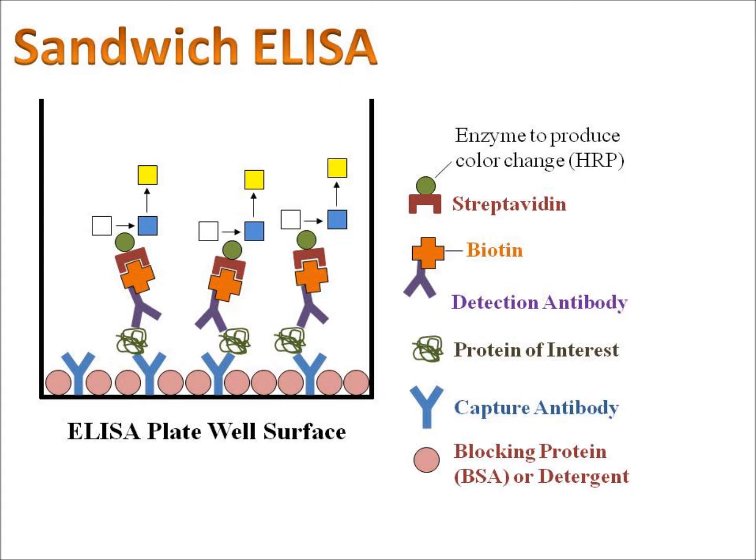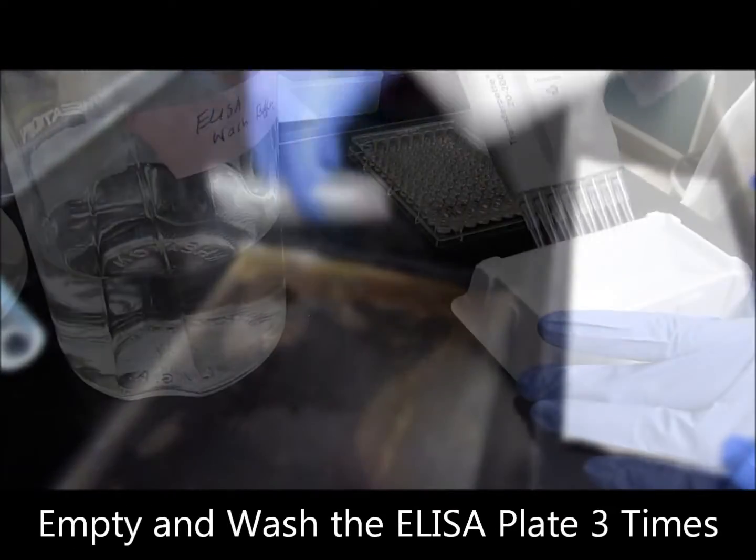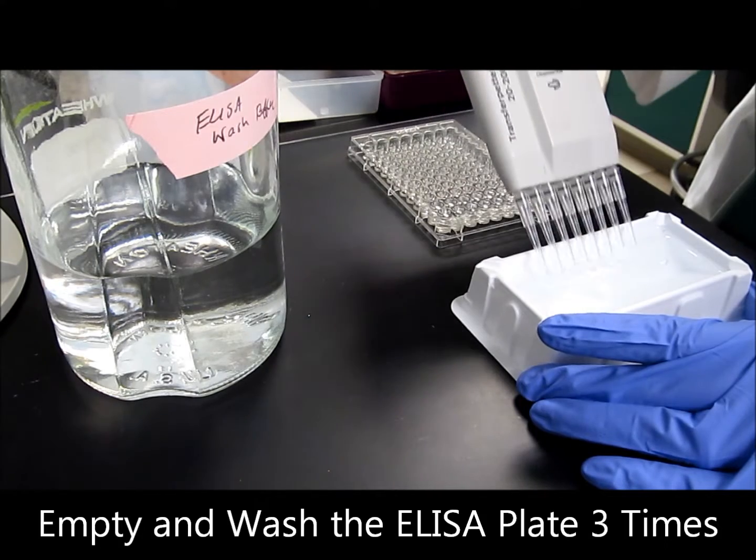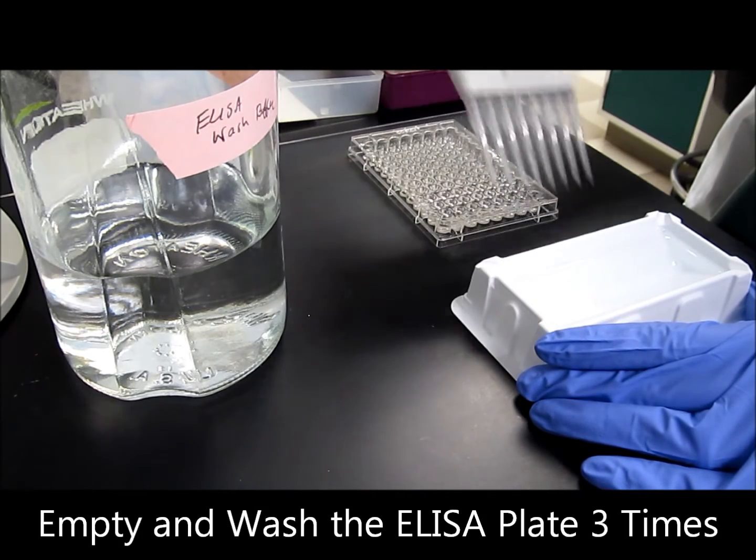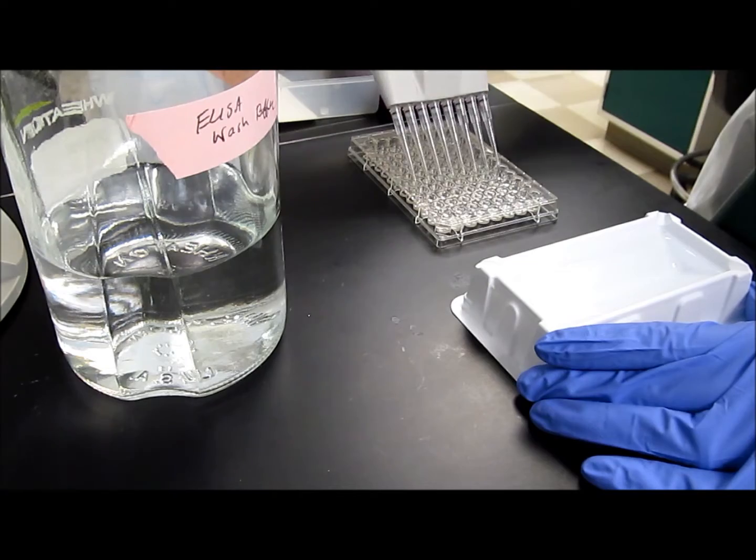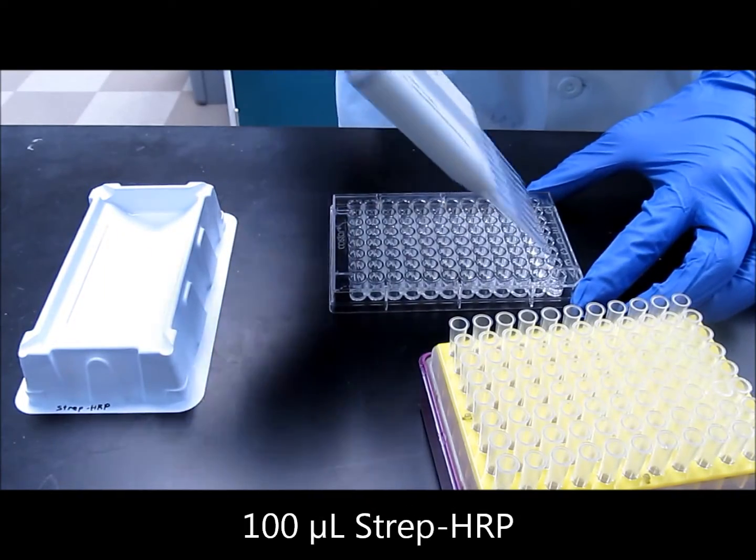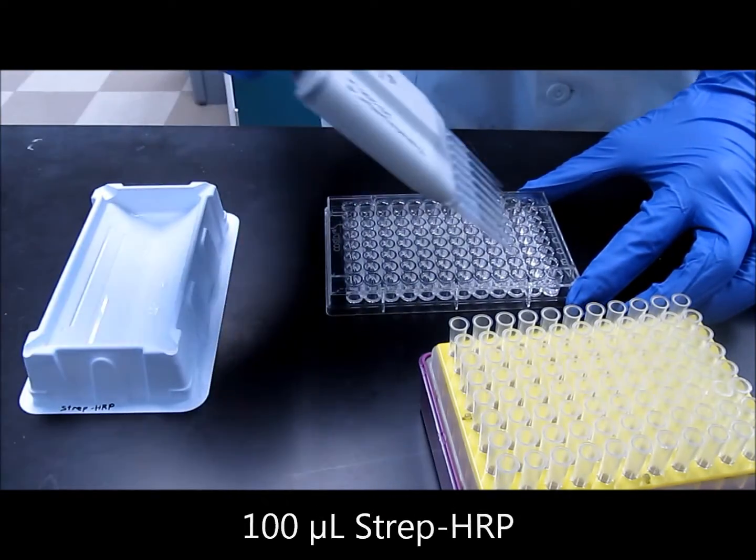Therefore, we have to perform one extra step to get the HRP enzyme connected to our detection antibody in order for us to measure our protein of interest. Once the strep HRP has been diluted, wash the ELISA plate three times in order to remove any unbound detection antibody from the wells. After washing, add 100 microliters of the strep HRP to each well of the ELISA plate.